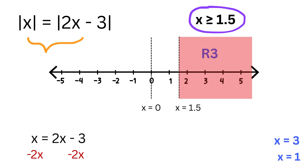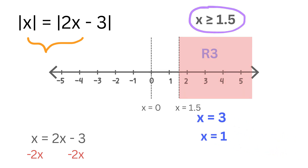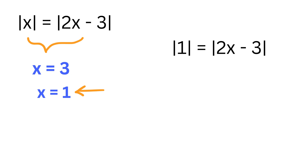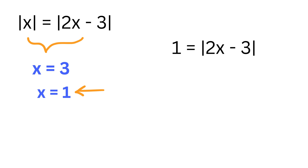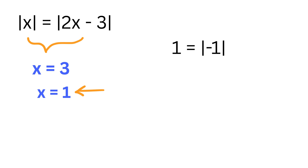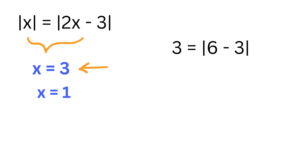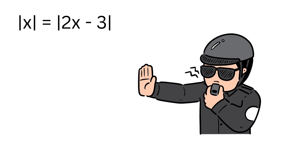Always check your solutions by plugging back in. For x equals 1: the left side is the distance of 1 from 0, which is 1, and the right side is the distance of 2 times 1 minus 3, which is 2 minus 3 equals minus 1, whose distance is 1 — so they match. For x equals 3: the left side is 3, and the right side is 2 times 3 minus 3, which is 6 minus 3 equals 3 — so they match too.